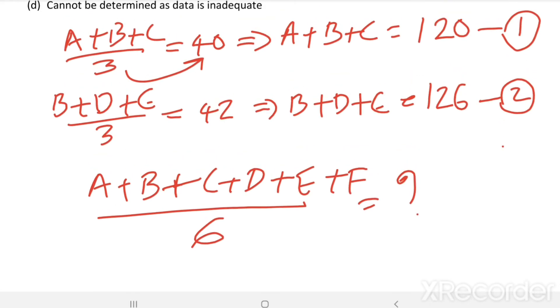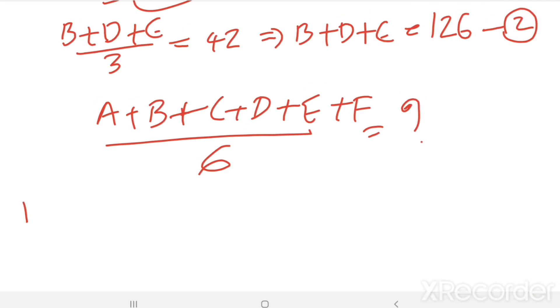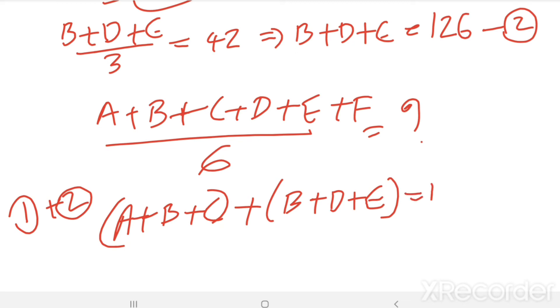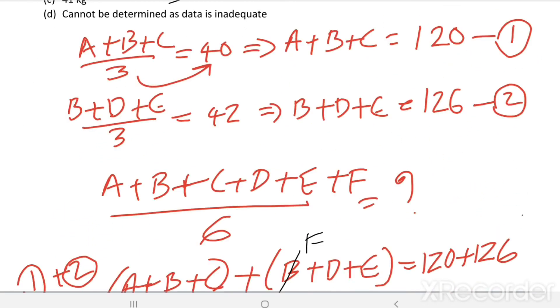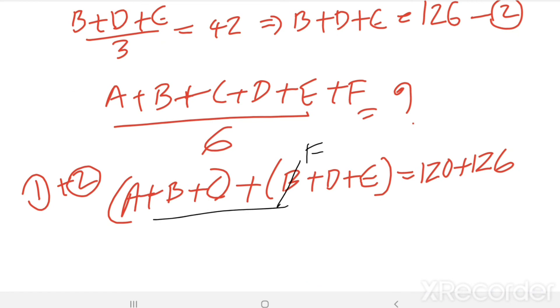Adding equation 1 and 2, we get A plus B plus C plus B plus D plus E equal to 120 plus 126. We know B equal to F, so change this B to F. Then this equation becomes A plus B plus C plus D plus E plus F.